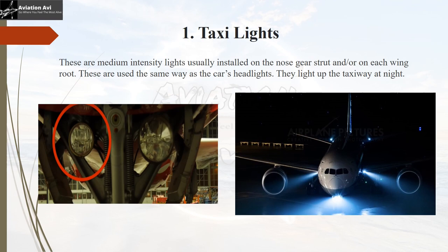The first light in this series is the taxi light. These are medium-intensity lights usually installed on the nose gear strut, as seen in the image, or on each wing root. They are used the same way as car headlights, lighting up the path of the taxiway in front of the pilot at night.